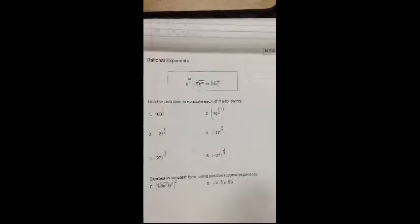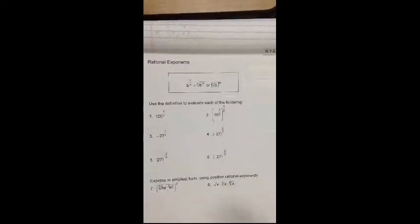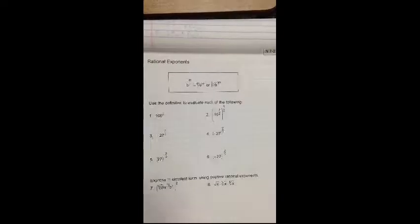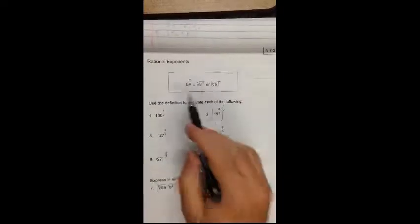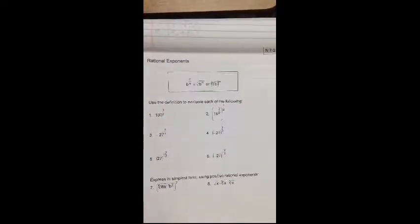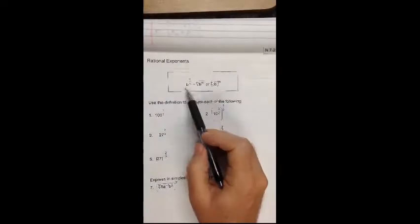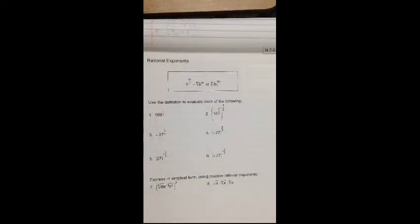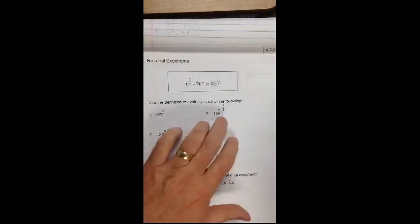We're looking at lesson N7-2, rational exponents. Right off the bat we have an explanation of a rational exponent: b to the m over n power is equal to the nth root of b to the m power, or the nth root of b, the whole thing, to the m power.